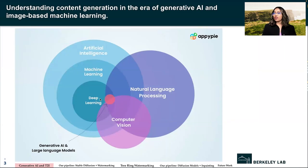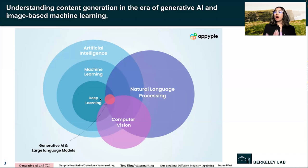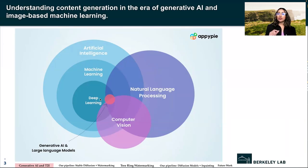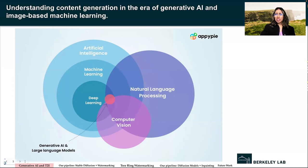Text-to-image models like Midjourney or DALL-E 2 use clever tricks to create images. The model is trained on millions of labeled images, represented numerically and projected into a latent space. The model learns to add noise until the image is completely random, and then that process is reversed — using a text prompt, the model starts with random pixels and slowly removes noise until it matches the text input. Finally, the model upscales the generated image, outputting a synthetic image that is sometimes hard to distinguish from a real photograph.